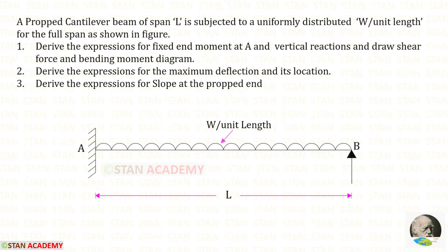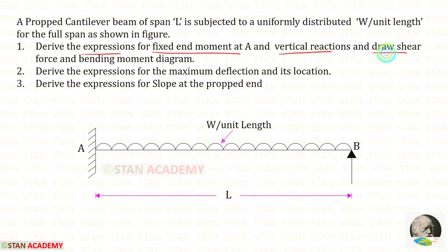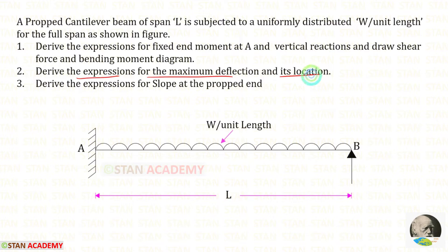Hello everyone. Today we are going to analyze this propped cantilever beam with uniformly distributed load for the full span. First we have to derive the expressions for the fixed end moment at A and the vertical reactions. Then we have to draw the shear force and bending moment diagrams, derive the expressions for the maximum deflection and its location, and the slope at the propped end.